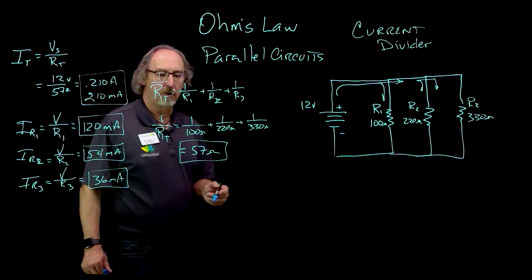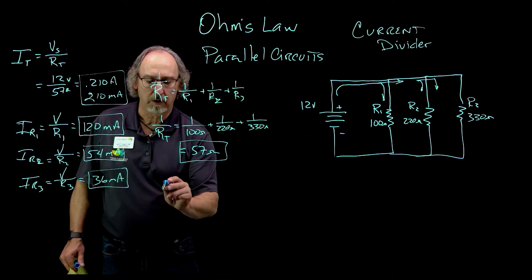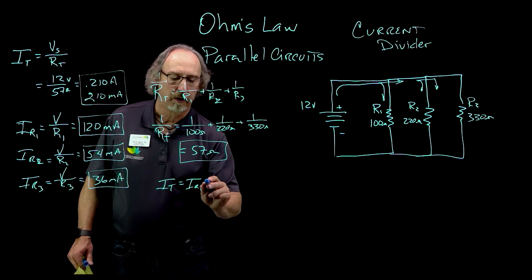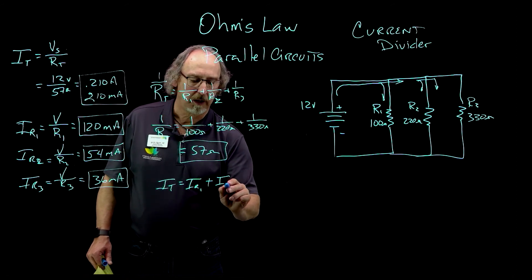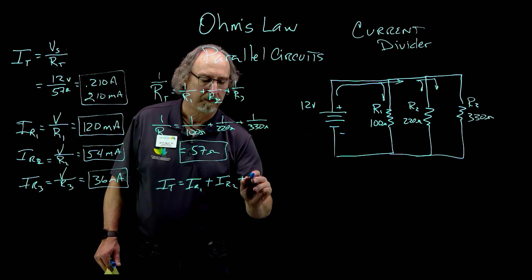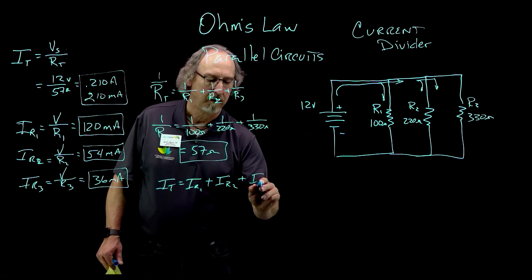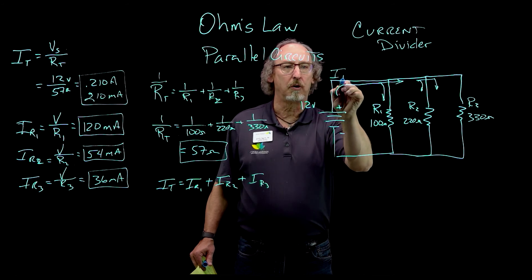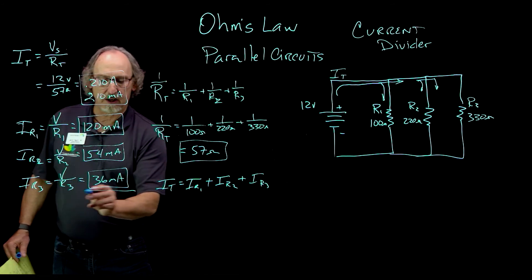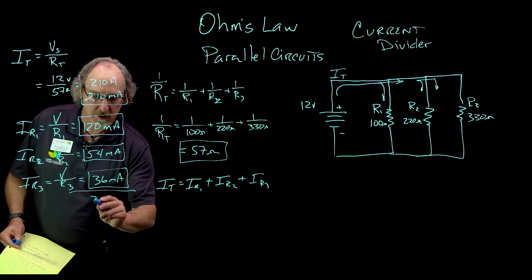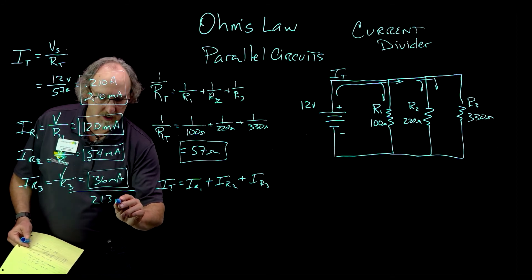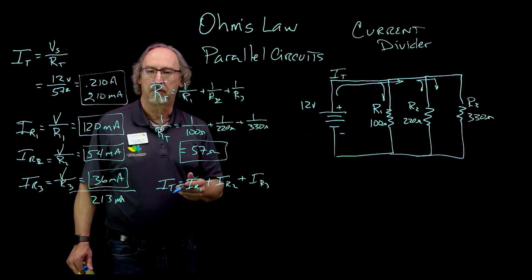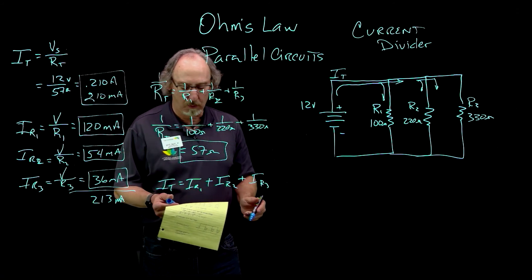Kirchhoff's current law says that my total current is going to equal the current in each branch added together. So the current down each branch should equal my total current. If I add these up, they come out to about 213 milliamps, which is extremely close to our 210 milliamps — so it looks good at that point.